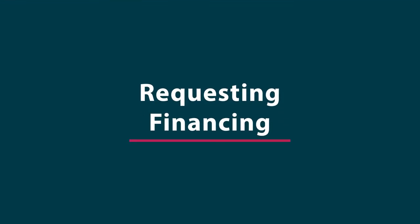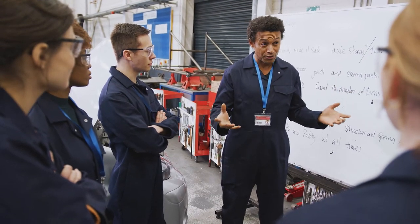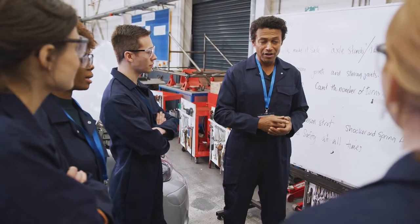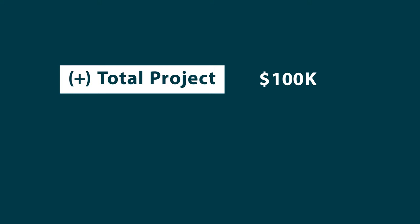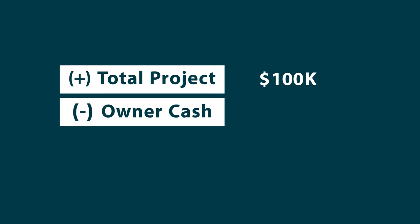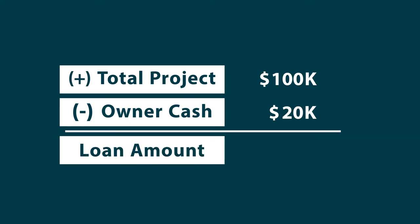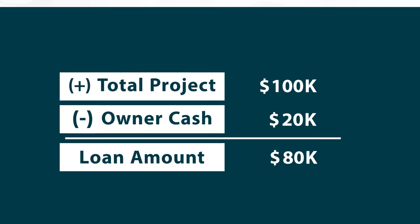Requesting financing: if you are using your business plan to request financing, there are several things your prospective lender will need to know. Financial institutions typically expect the owner to have skin in the game by investing some personal funds in the business. This capital usually needs to be from the owner and not borrowed from another source. Startups should not expect to borrow 100% of the total project cost. Typically, the owner can expect to contribute around 20%. Using a simple example, if the project cost including equipment, inventory, and working capital is $100,000 and the financial institution requires a 20% owner contribution, the owner will need to contribute $20,000. The loan amount will be $80,000, and the lender will expect the loan amount to be collateralized by the owner.